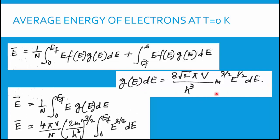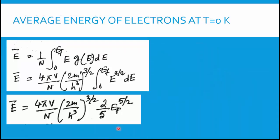Substituting the expression for g(E) dE from the phase space lecture and taking constants outside the integral, I integrate E · E^(1/2) = E^(3/2) from 0 to E_F, giving E_F^(5/2) / (5/2). This yields Ē = (4πV/N) · (2m/h²)^(3/2) · (2/5) · E_F^(5/2).